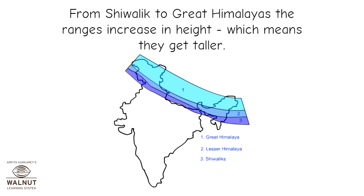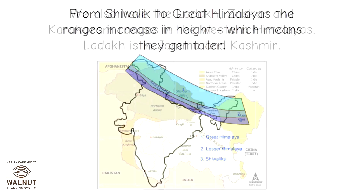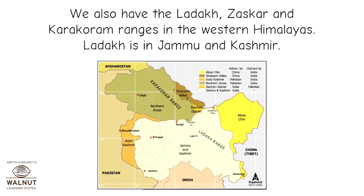From Shivalik to Great Himalayas, the ranges increase in height, which means they get taller. We also have the Ladakh, Zaskar, and Karakoram ranges in the western Himalayas.